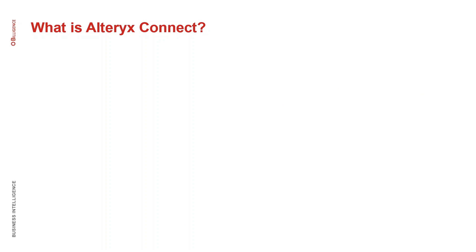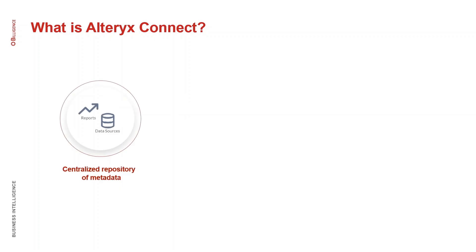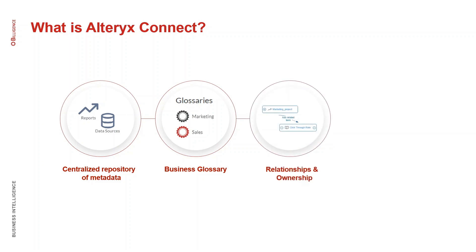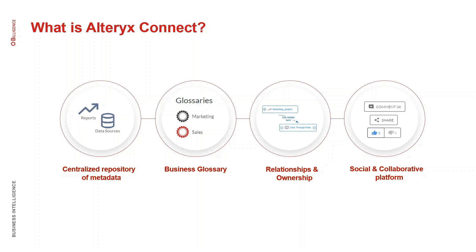What Alteryx Connect really is, is a combination of data cataloguing with human insights. It includes a centralized repository of your metadata where you can store information about all of the data assets within your organization. Combined with the business glossary, it becomes a single point of truth for all of your terms and KPIs. You can establish relationships between different assets, assign ownership, and really start the data exploration process. And as a natural byproduct, social collaboration will be triggered.